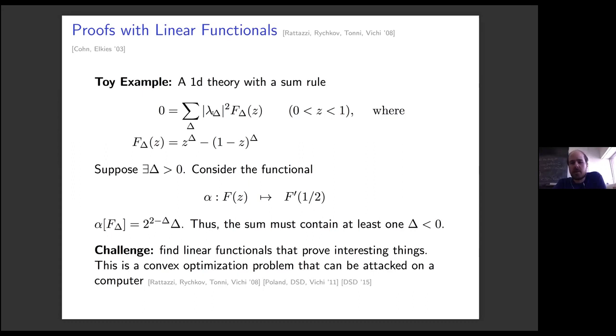In this case, if you have this sum rule, we can prove something about it with a linear functional. We can consider the linear functional that takes a function of z to its derivative at one-half. If you apply this to the functions appearing in the sum rule, you get this quantity 2^(2-delta) times delta. The point is that this quantity is positive when delta is positive and negative when delta is negative. So applying this to the sum rule, you deduce that there has to exist at least one negative delta in this theory. That's a very simple piece of information that you can get out of the sum rule by considering linear functionals.